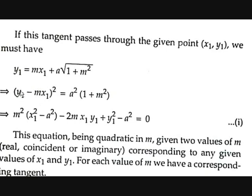This equation is a quadratic in m, so there can be two values of m — real, coincident, or imaginary — corresponding to whether the point (x₁, y₁) lies outside, on, or inside the circle. For each value of m, we get a corresponding tangent. As you can see in the picture, from point P(x₁, y₁) two tangents PT and PT′ are drawn to the circle.